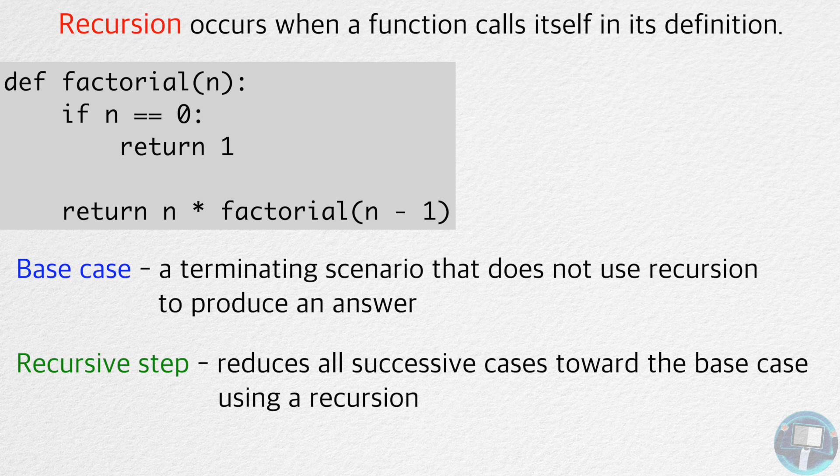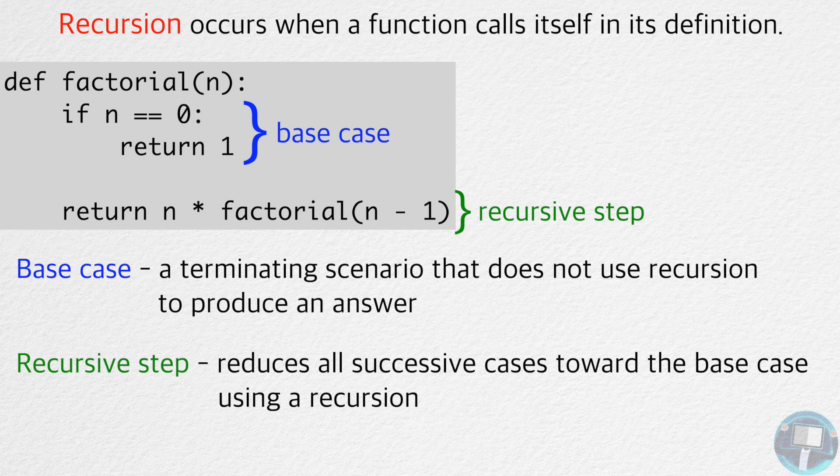In the function factorial, the base case occurs when n is equal to zero, where the function simply returns one. The recursive step occurs when n is greater than zero, where the function calls itself recursively on a smaller version of the input.